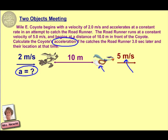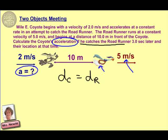There is one important thing about this type of problem that always helps set it up more smoothly, and that is the key that these two objects are going to be at the same place. If the coyote is going to catch the Road Runner, then at some point they must be located at the same position. So the position of the coyote, subscript C, at some point needs to be equal to the position of the Road Runner.